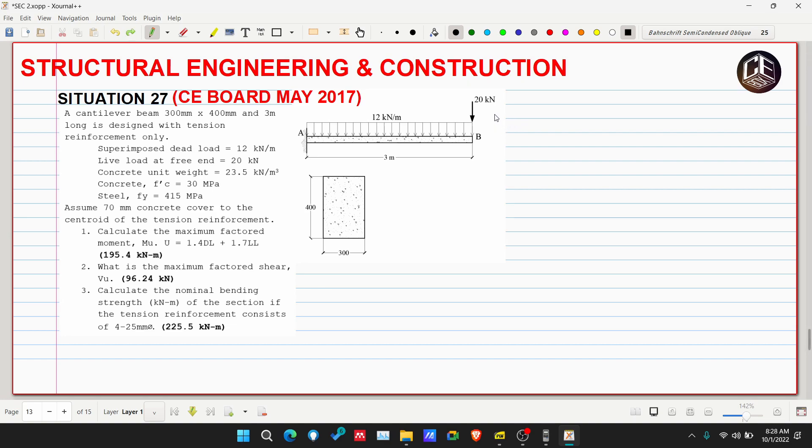This is the cross section of our beam. Take note: the 400 millimeters shown is the overall depth or height of our beam, which is different from the effective depth. We can get the effective depth since we have the concrete cover of 70 millimeters.